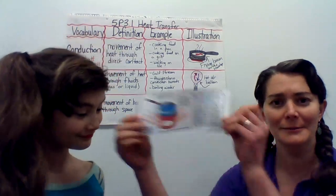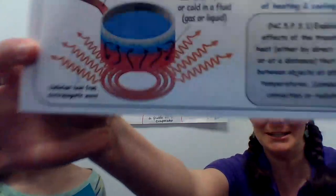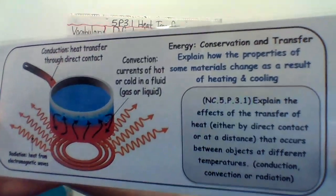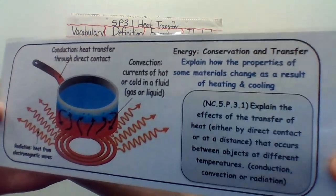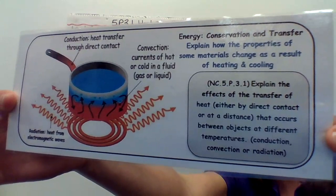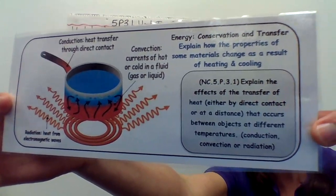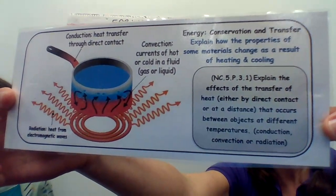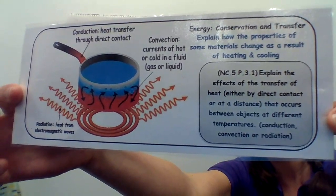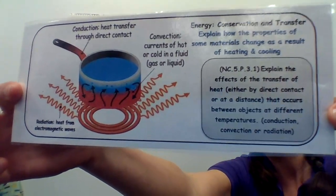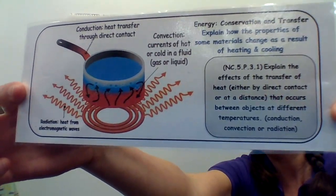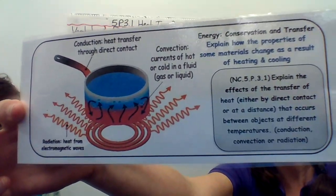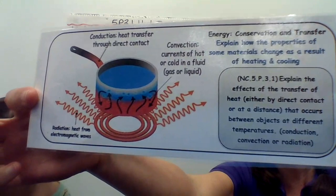Starting a brand new standard right here: energy conservation and transfer — explaining how the properties of some materials change as a result of heating and cooling. More specifically, we're going to be focusing on the effects of the transfer of heat, either by direct contact or at a distance, between objects at different temperatures. We're going to be talking about the processes of conduction, convection, and radiation.